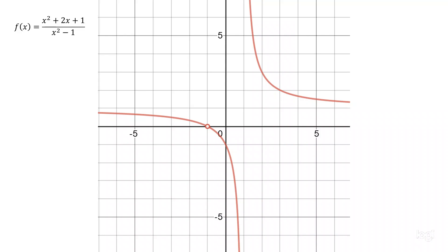In this video, we are going to look at vertical asymptotes of the function f of x equals x squared plus 2x plus 1 over x squared minus 1.